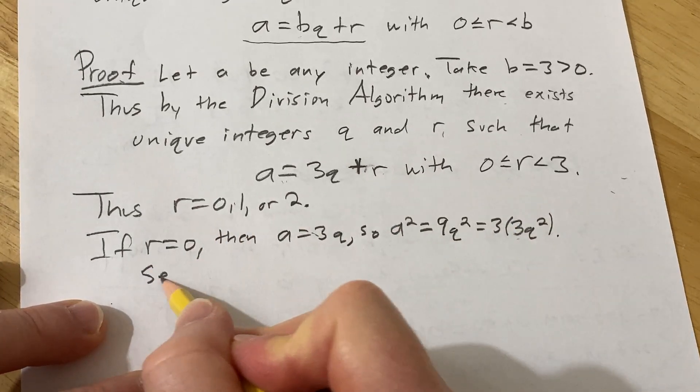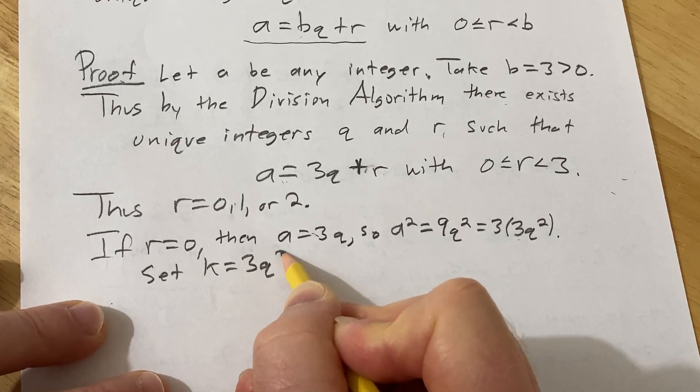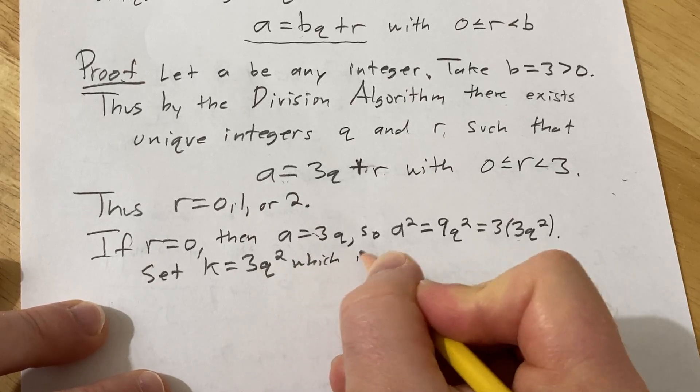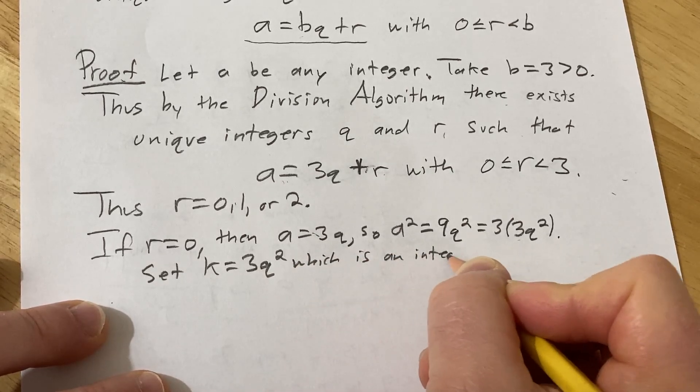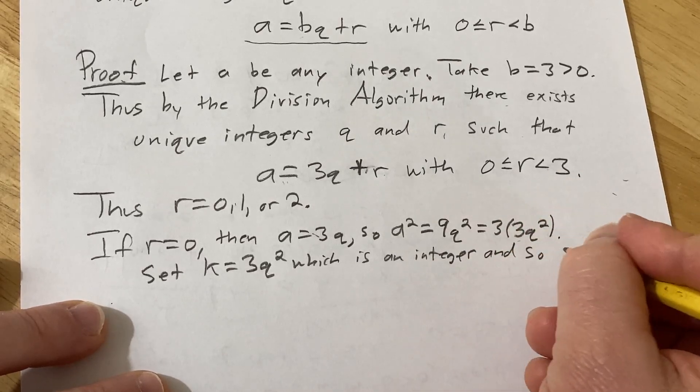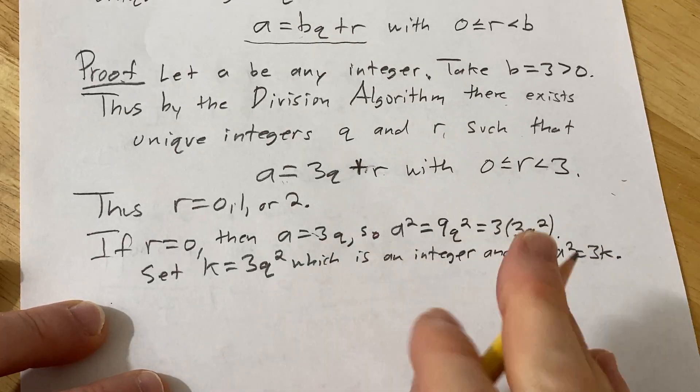So we can take k to be 3q squared which is an integer. Set k equal 3q squared which is an integer because it's a product of integers. And so a squared equals 3k and so we're done, we've completed the proof.